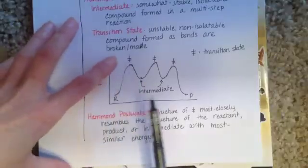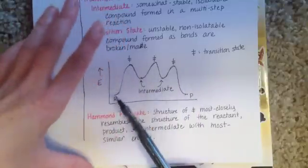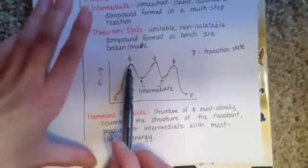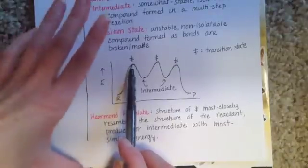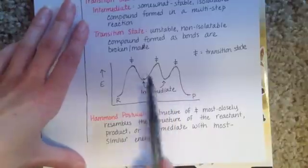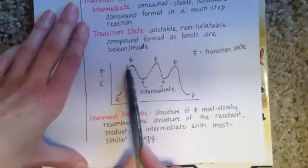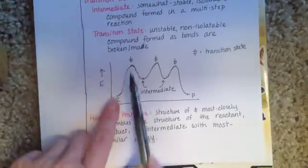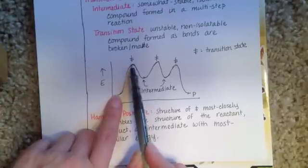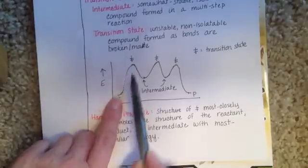Whatever structure the transition state has, with half-bonds in the process of being formed or broken, it's going to look most like the reactant, product, or intermediate that is closest to it on the energy level diagram. So for this particular transition state, it's going to look like some combination between the reactant and the first intermediate, and because it's closest in energy to the intermediate, it will resemble that intermediate more.